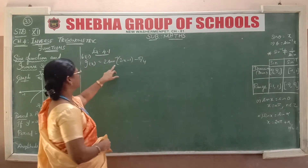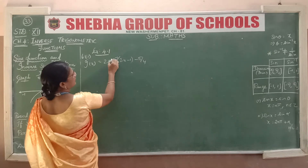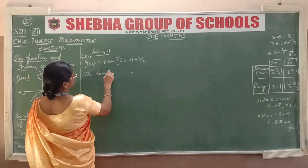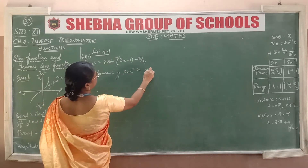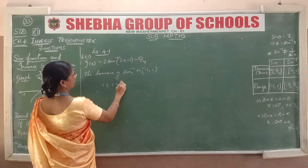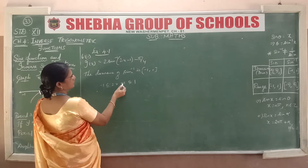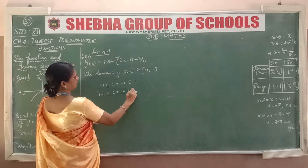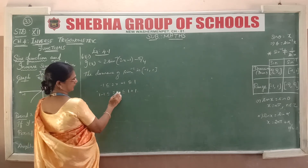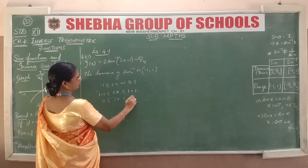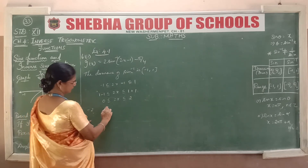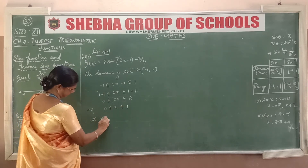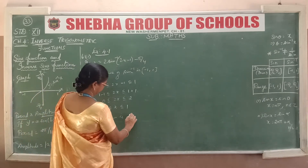Second subdivision: find the domain of sin⁻¹(2x - 1) - π/4. The sin⁻¹ domain requires -1 ≤ 2x - 1 ≤ 1. Adding 1 to all sides: 0 ≤ 2x ≤ 2. Dividing by 2: 0 ≤ x ≤ 1. So our domain is [0, 1].